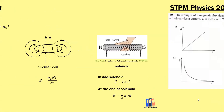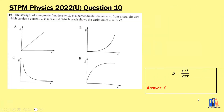Continuing with the 2022 Ulangan paper, question 10: the magnetic flux density at a perpendicular distance R from a straight wire carrying a current is measured. Which graph shows the variation of B with R? For a straight wire, B equals mu-naught I over 2 pi R, so B is inversely proportional to the distance R. The answer is C.